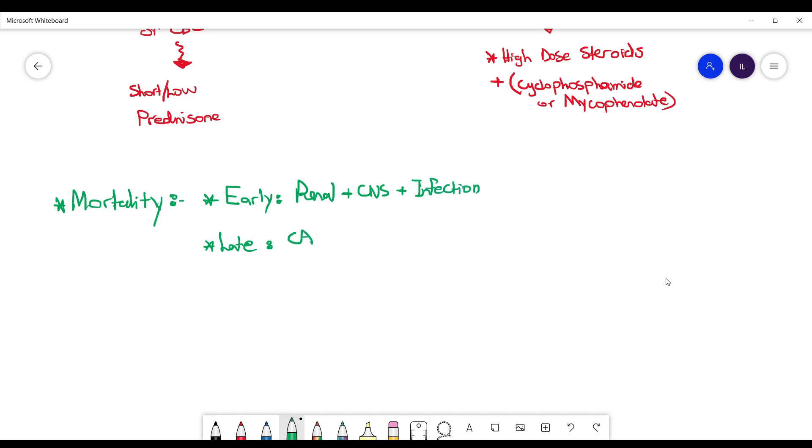While late in the course of the disease, coronary artery disease is the most common cause at that time. This is it for SLE, see you guys in the next video.